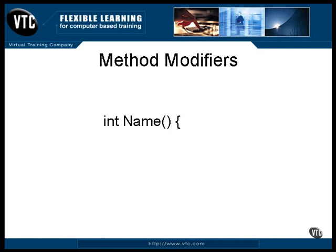This is a method with no modifiers. It's declared to return an int value, and it has no arguments. All methods can be accessed inside their own class no matter what, but access from outside the class can be specified. This example allows the access to the method to default, and the default is that any class in the same package as this one can access the method.